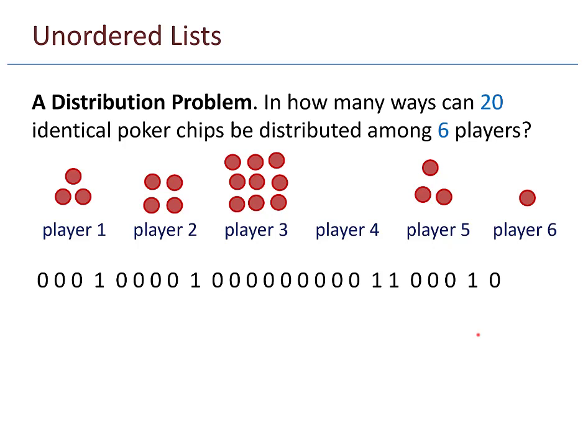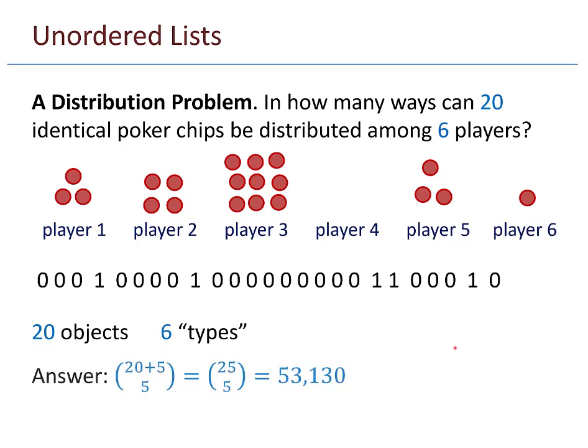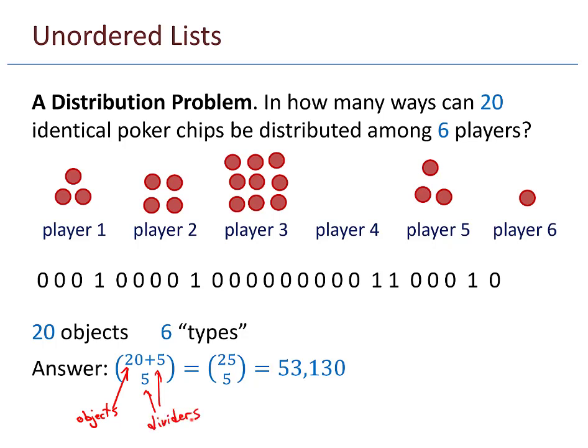They are a bag type of problem also. So the solution to this problem? Well, I have 20 zeros and five ones. So 20 objects and six types. So 20 zeros, five ones. So the answer is 25 choose five, which ends up being 53,130.